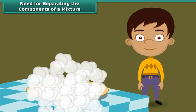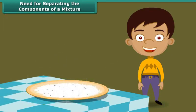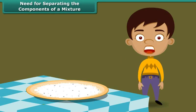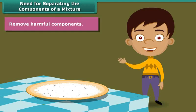Similarly, we find stones, mites, etc. in rice, wheat, pulses, etc. We remove them before cooking because they are harmful to our body. So, the second reason for separation is removal of harmful components.